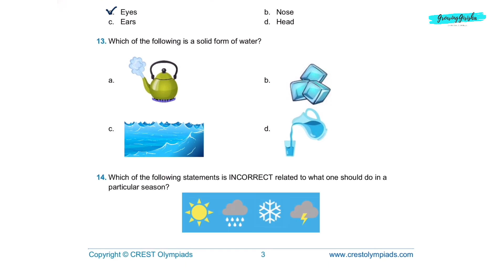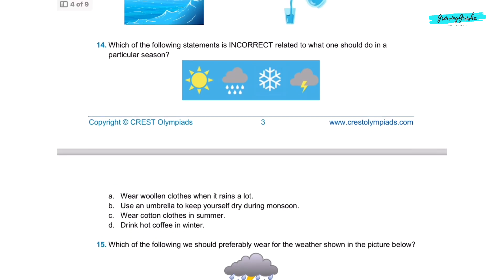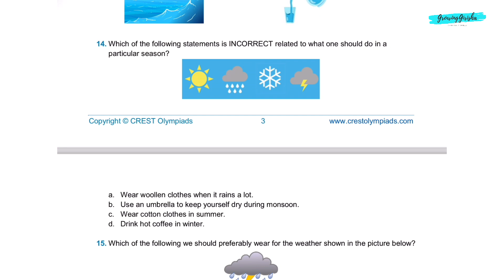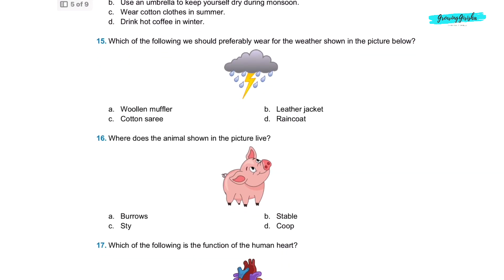Question 13. Which of the following is a solid form of water? Option B, ice. Question 14. Which of the following statements is incorrect related to what one should do in a particular season? A, wear woolen clothes when it rains a lot. B, use an umbrella to keep yourself dry during monsoon. C, wear cotton clothes in the summer. D, drink hot coffee in the winter. Option A, wear woolen clothes when it rains a lot.